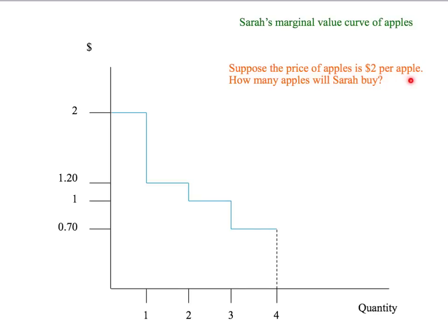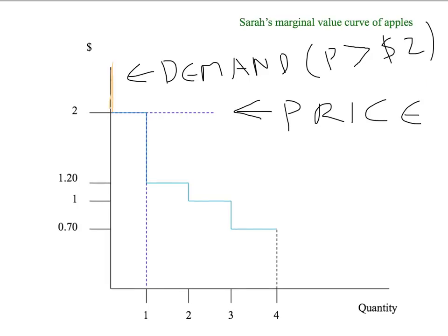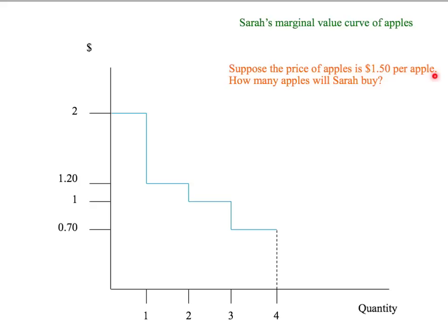What if the price of apples is exactly $2 per apple? How many apples will Sarah buy then? We've put the price at exactly $2 — shown by the dotted blue line. At exactly $2, Sarah doesn't care if she has $2 or the first apple. She definitely won't buy a second apple, since her marginal value of a second apple is only $1.20. At a price of $2, she's just indifferent between buying one apple and not buying the apple. Let's pick a different price, say $1.50.